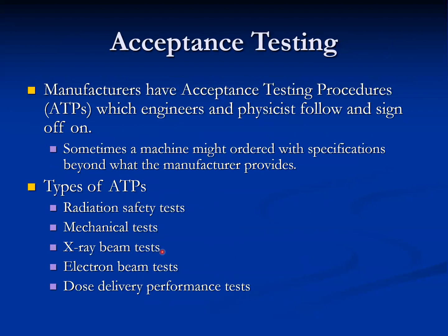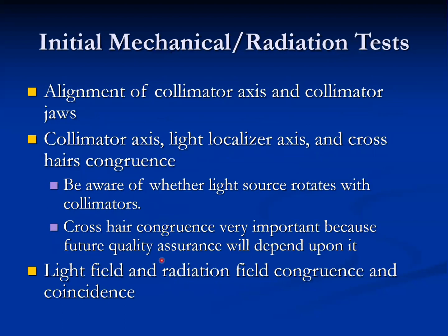The manufacturer has an acceptance testing procedure which engineers and physicists follow and sign off on. Sometimes a machine may be ordered to specifications beyond what the manufacturer provides. The types of ATP include radiation safety tests, mechanical tests, X-ray beam tests, electron beam tests, and dose delivery performance tests.